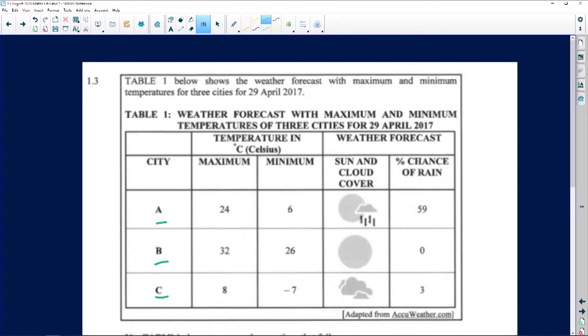It says maximum and minimum, so we've got the maximum and we've got the minimum. We can see that the maximum for A is 24 and the minimum is 6. For B the maximum is 32 and the minimum is 26, that must have been a really hot day for that particular place. And then C, the maximum is 8 and the minimum is -7.